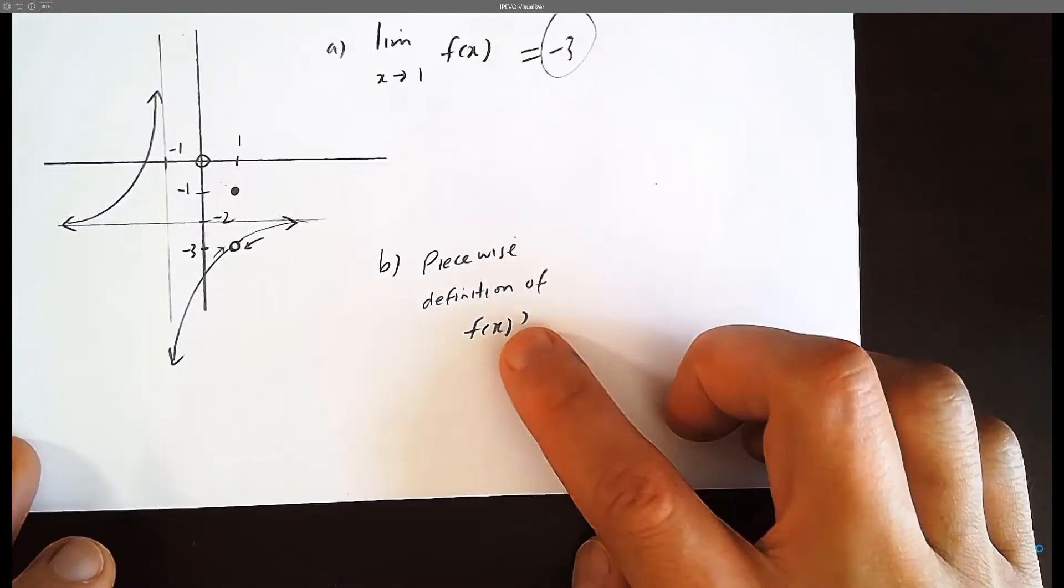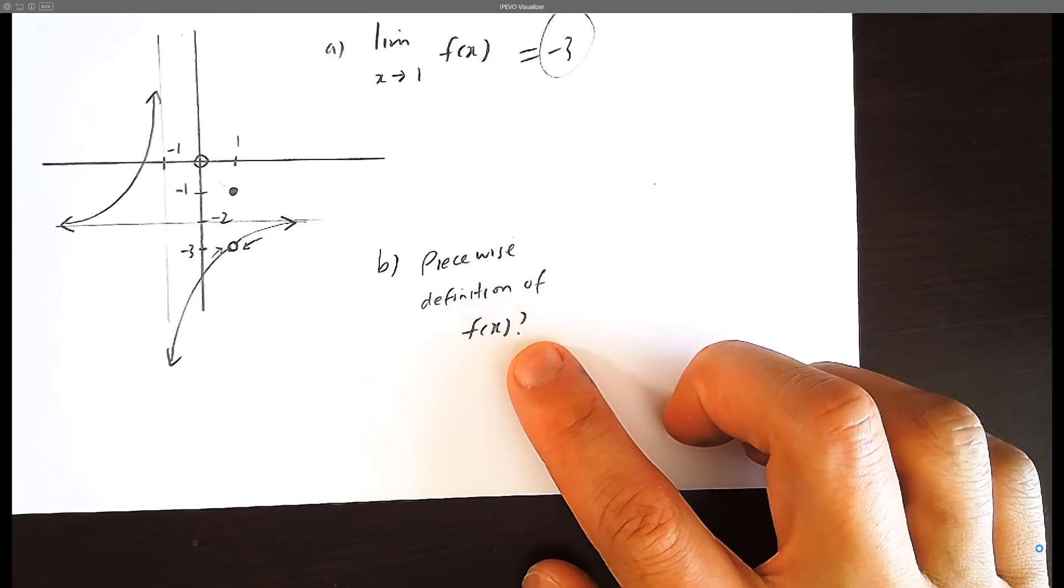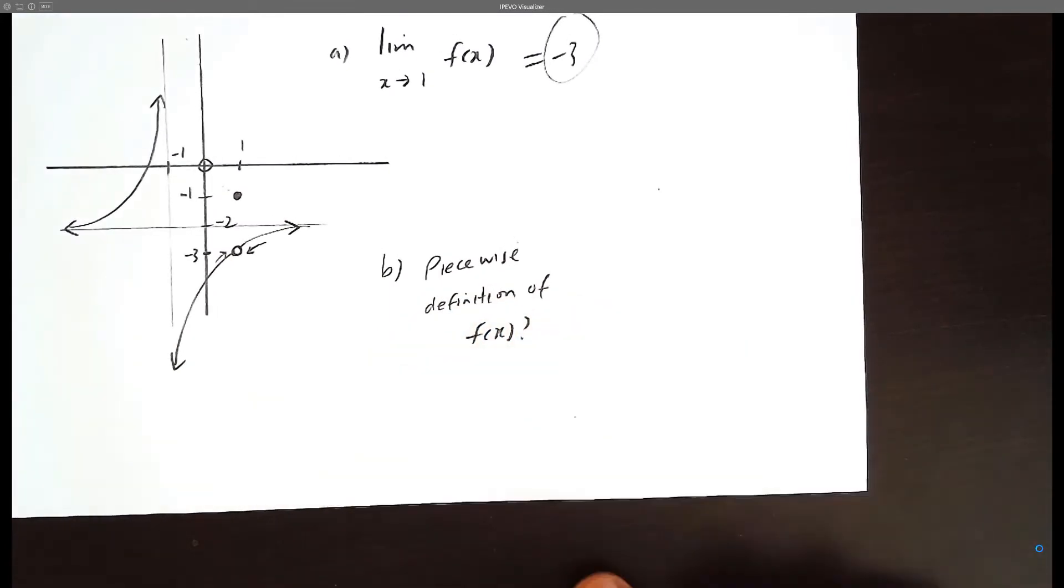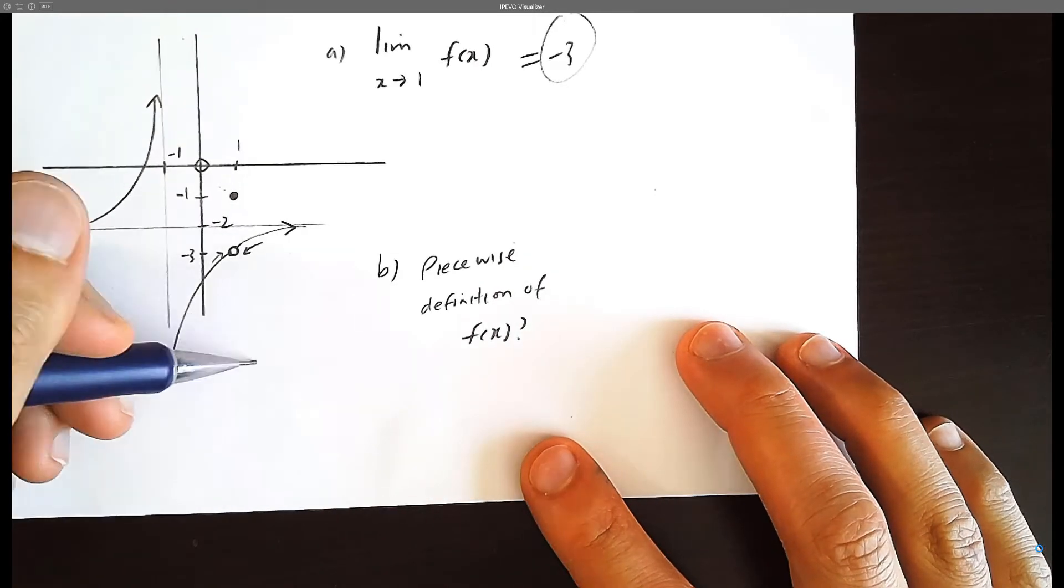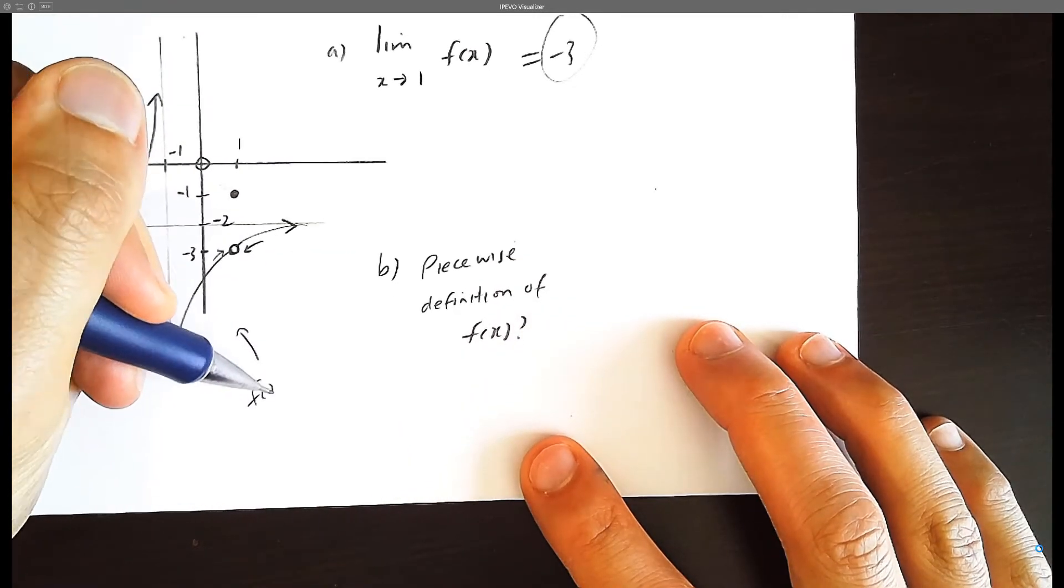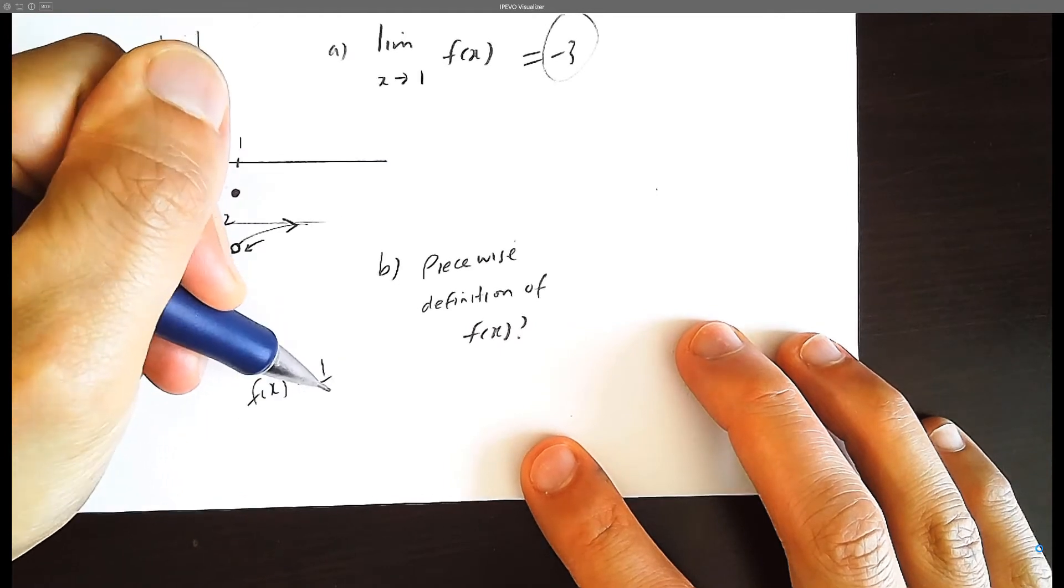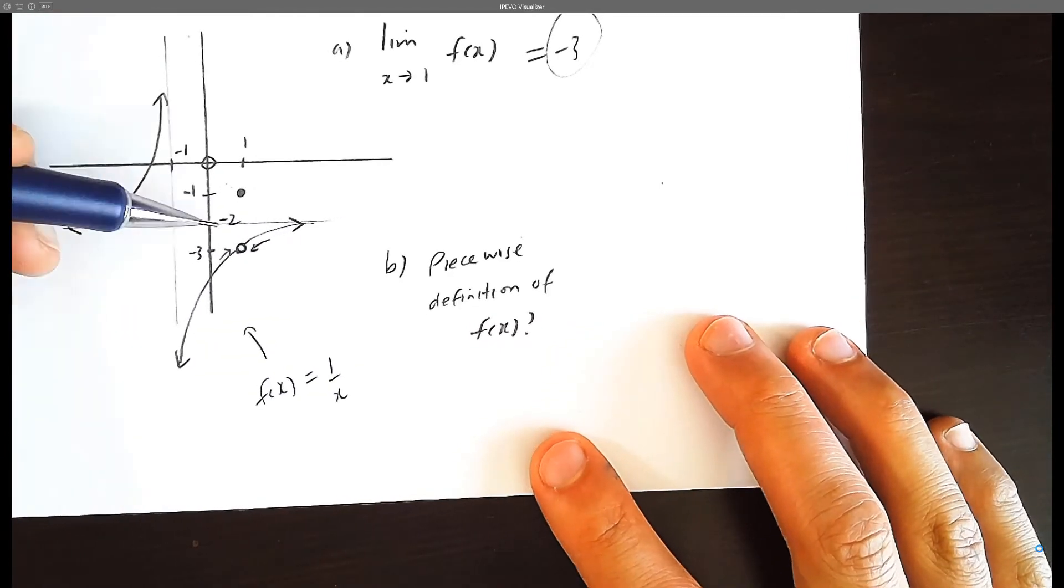So just as a good refresher, it's nice to refresh what this rational function actually is. Well this looks like a transformation of the 1 over x graph. If I say f of x equals 1 over x, but at the same time we know it's transformed.